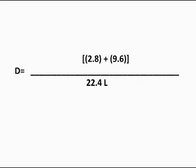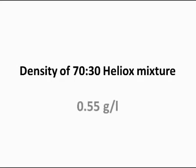That brings us to 2.8 plus 9.6. And now I have 12.4 grams over 22.4 liters. And when we divide that out we find out that the density of a 70 to 30 heliox mixture is about a half a gram, a little over a half a gram per liter. So in these examples you can see the different densities of gas mixture.